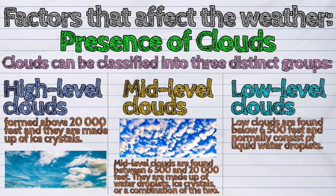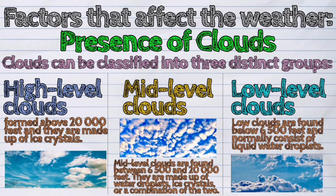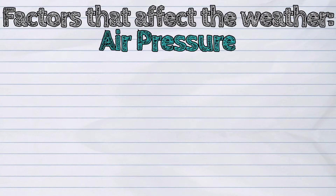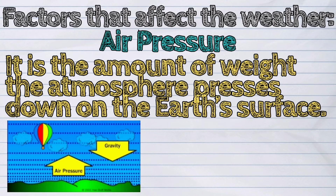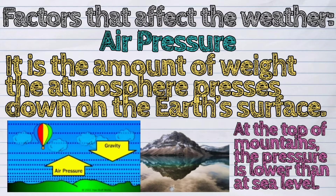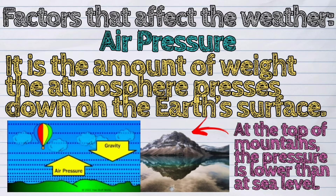Low clouds are found below 6,500 feet and normally consist of liquid water droplets. Air pressure is also a factor that affects the weather. It is the amount of weight the atmosphere presses down on the Earth's surface. At the top of mountains, the pressure is lower than at sea level.